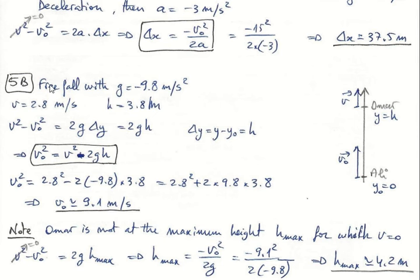This is free fall motion with g = -9.8 m/s². We have a Y-axis pointing upward, so the reference will be Y₀ = 0, and Omar is above by height H = 3.8 meters. The initial throwing speed is V₀ here, and the arrival speed at Omar is V = 2.8 m/s. We know the arrival speed value, and the goal is to find V₀.